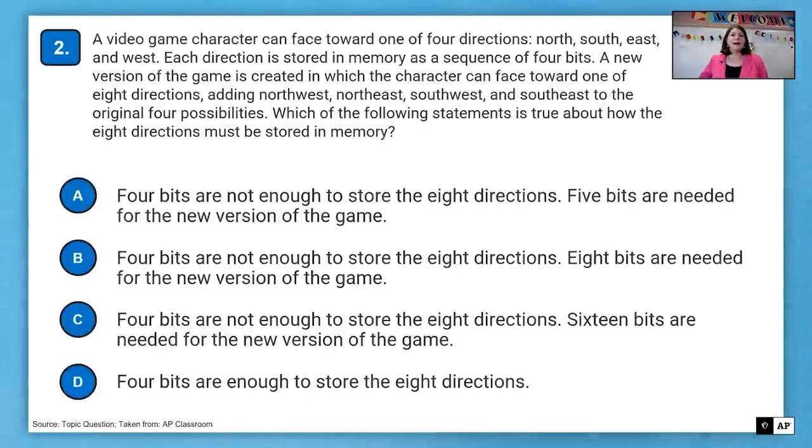Question two. A video game character can face toward one of four directions: north, south, east, and west. Each direction is stored in memory as a sequence of four bits. A new version of the game is created in which a character can face toward one of eight directions. So we started with four and now we moved on to eight.